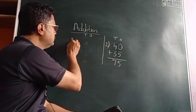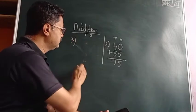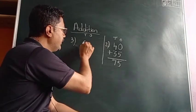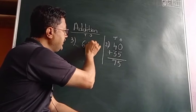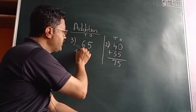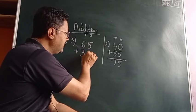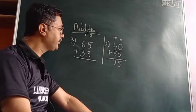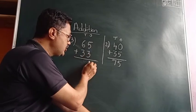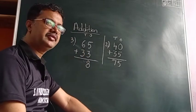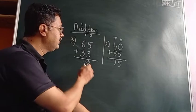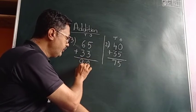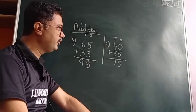Third example: 65 plus 33. Now we will add this. Five plus three is equal to eight. Six plus three is equal to nine. Very good, children!